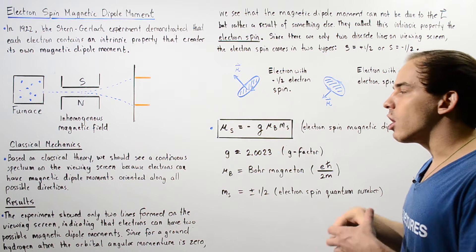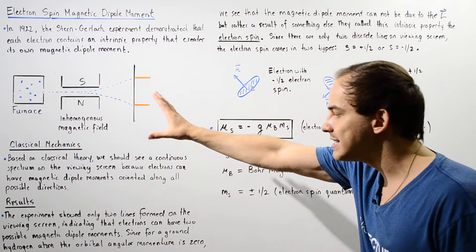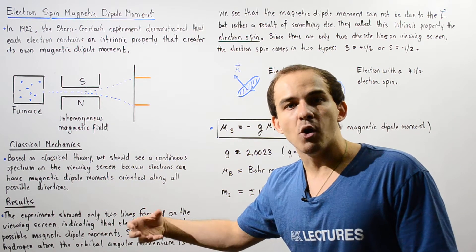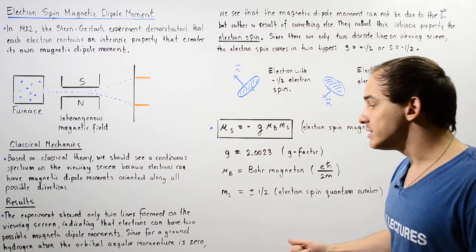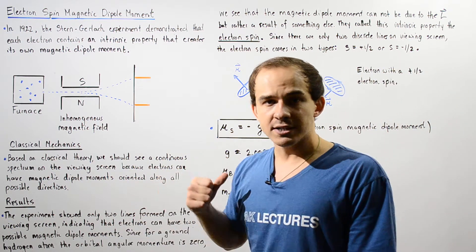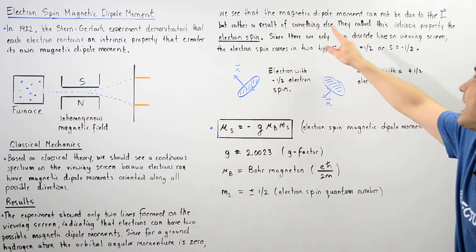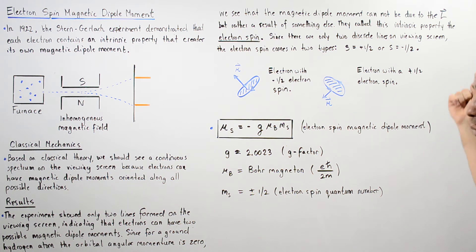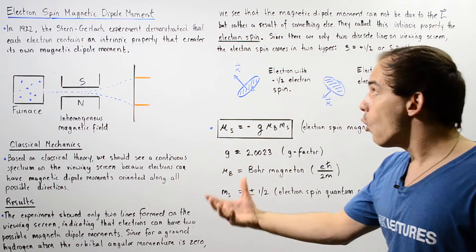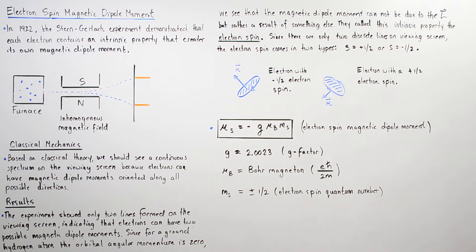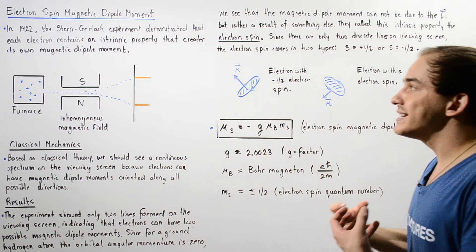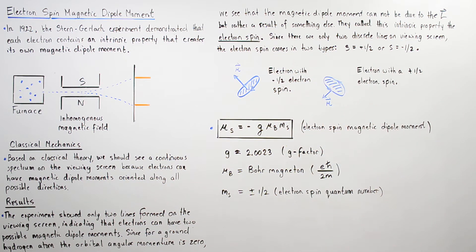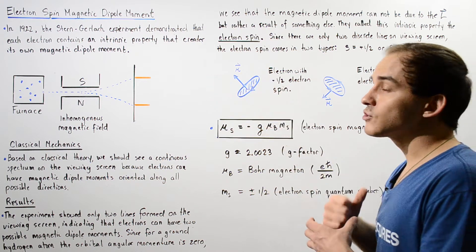For a ground-state hydrogen atom, and even for the silver atom used in their experiment, the orbital angular momentum is equal to zero because the orbital quantum number is equal to zero. This means the magnetic dipole moment of the atom cannot be a result of L — the orbital angular momentum. Therefore, the magnetic dipole moment must be created by something else, and this something else they called the electron spin.